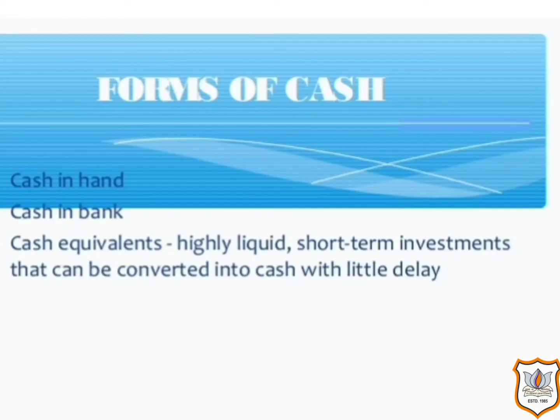Now let us see the forms of cash. First, we have cash in hand; second, cash in bank; and third, cash equivalents. Cash equivalents are short-term, highly liquid investments that are readily convertible into a known amount of cash and which are subject to an insignificant risk of change in value. An investment normally qualifies as a cash equivalent only when it has a short maturity of say three months or less from the date of acquisition.